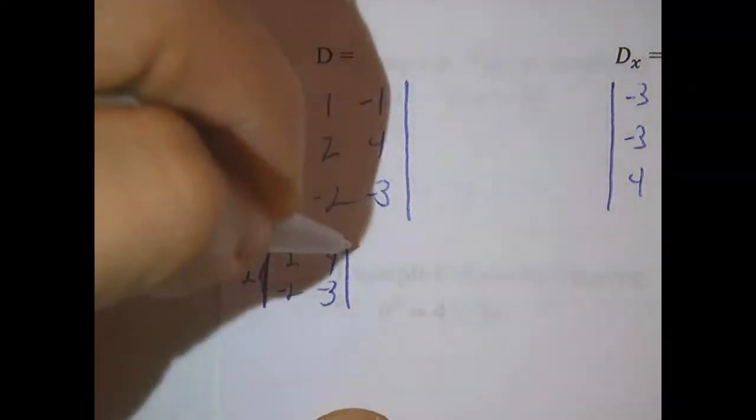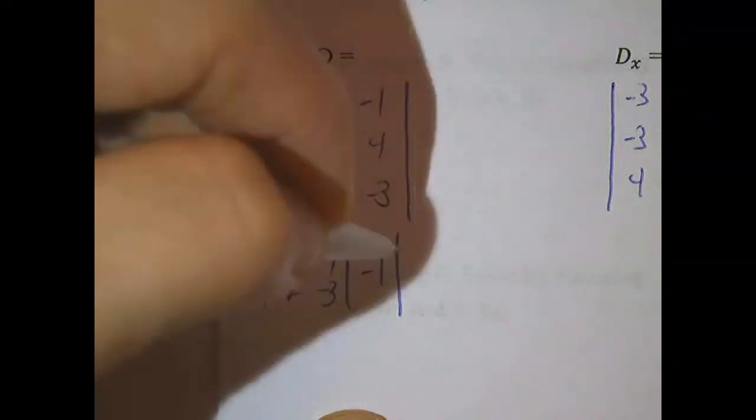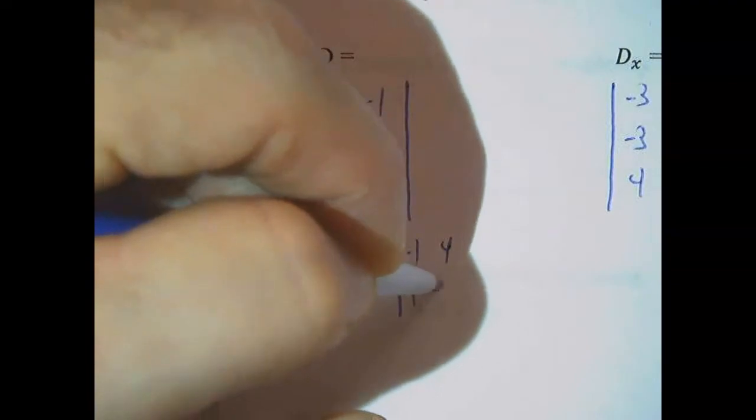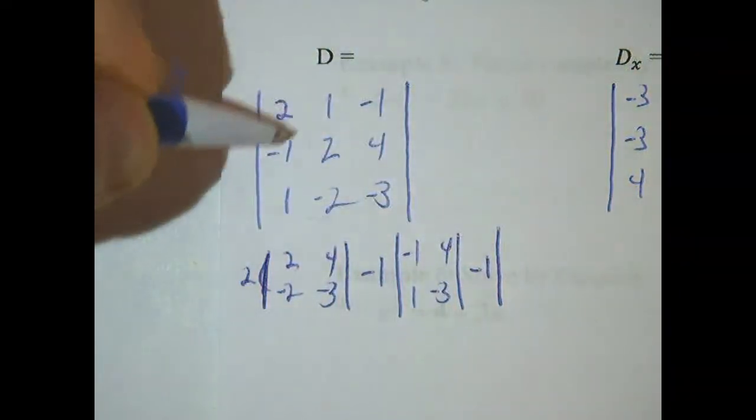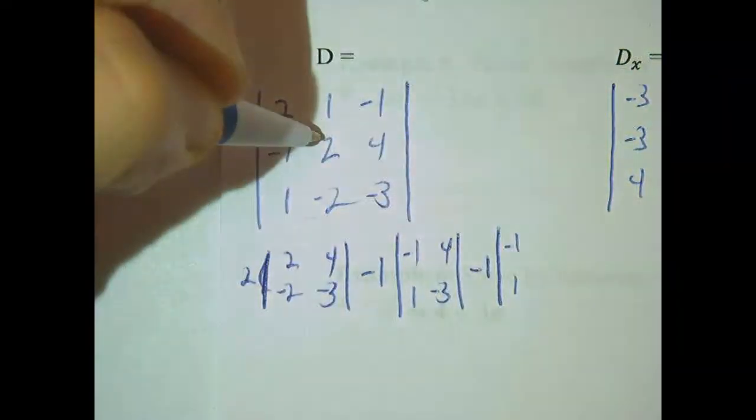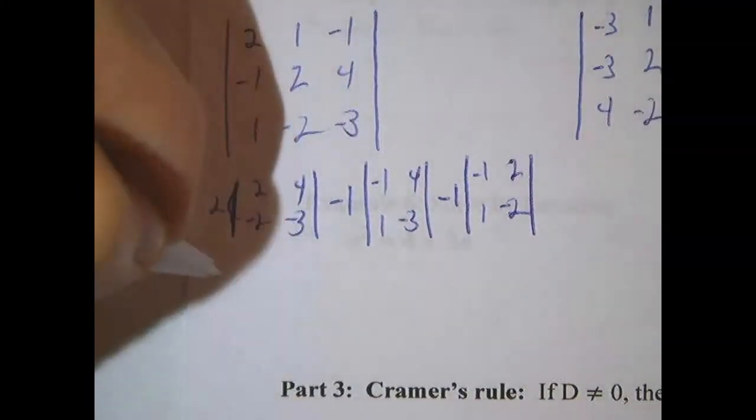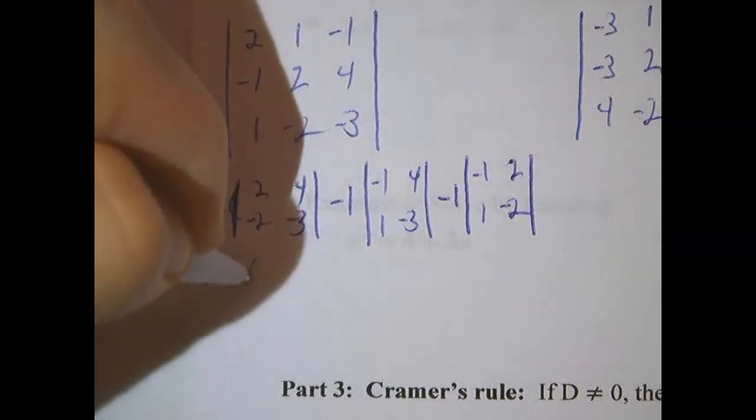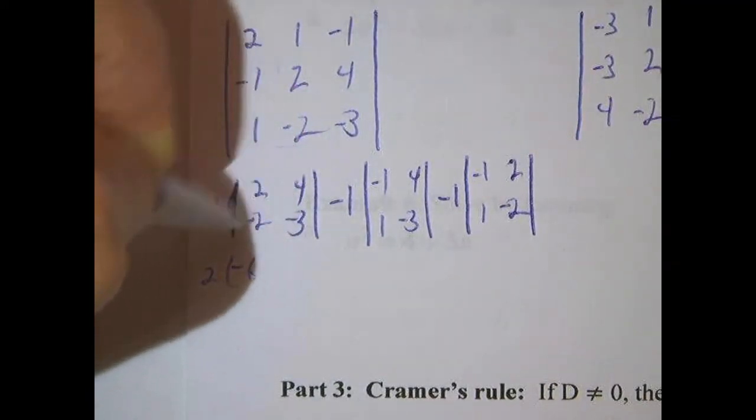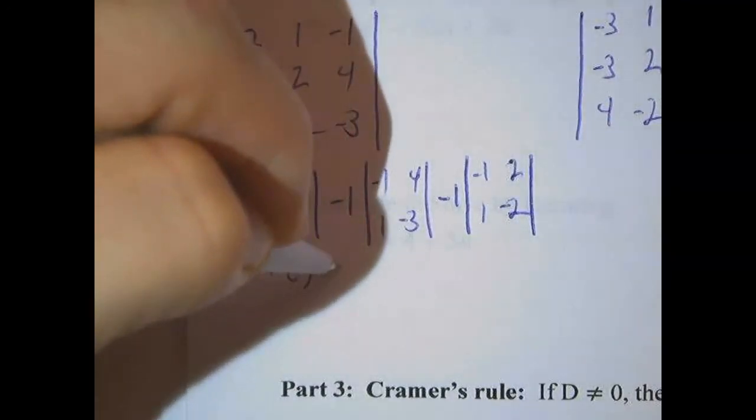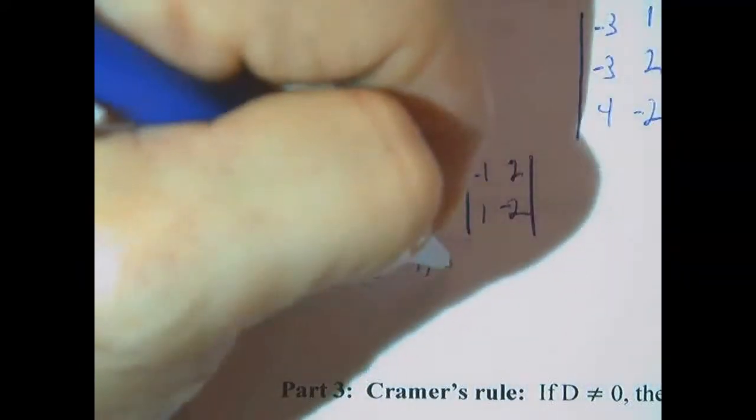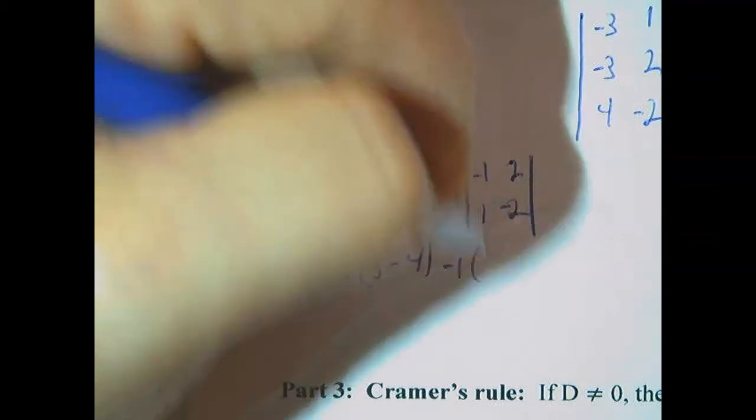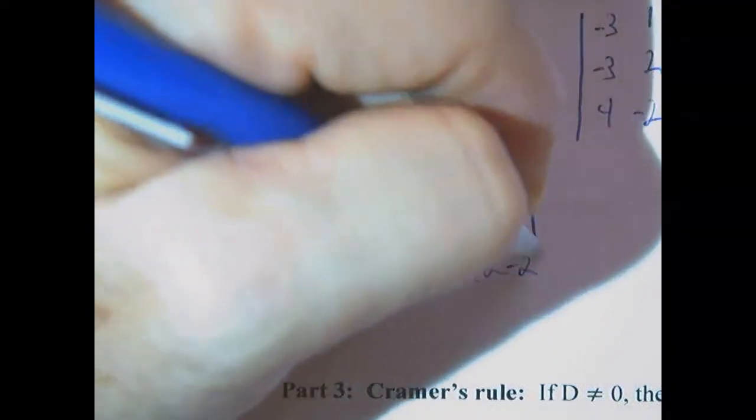Minus 1, I change the sign. So this is minus 1 times negative 1, 1, 4, negative 3. And then same sign. So it's minus 1 times negative 1, 2, negative 2. So this is 2 times negative 6 minus 8, minus negative 8 so plus 8, minus 1 times 3 minus 4, minus 1 times 2 minus 2.